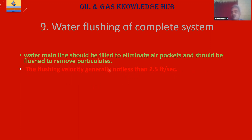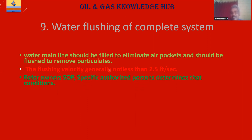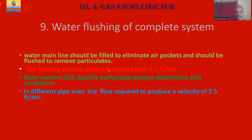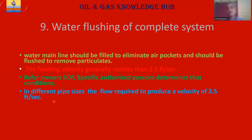The flushing velocity is generally not less than 2.5 feet per second — this is only a general guideline. Refer to the SOP; specific authorized persons such as the engineering manager or senior engineers will guide you on what velocity is required. For different pipe sizes — whether 1 inch, 2 inch, 4 inch, 6 inch, 8 inch, 12 inch, up to 24, 26, 28 inches — any size of pipe should maintain a minimum velocity of 2.5 feet per second, or as per the SOPs.